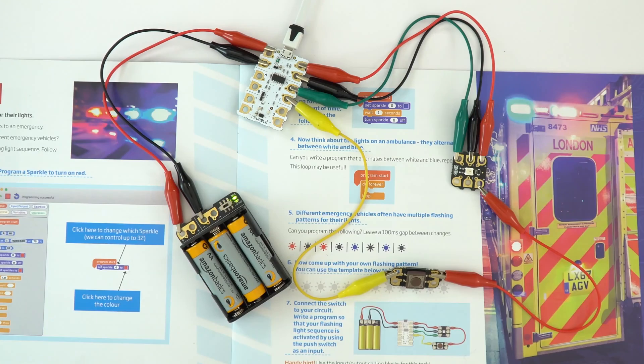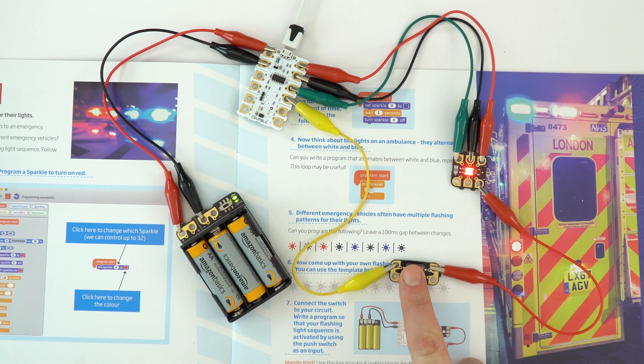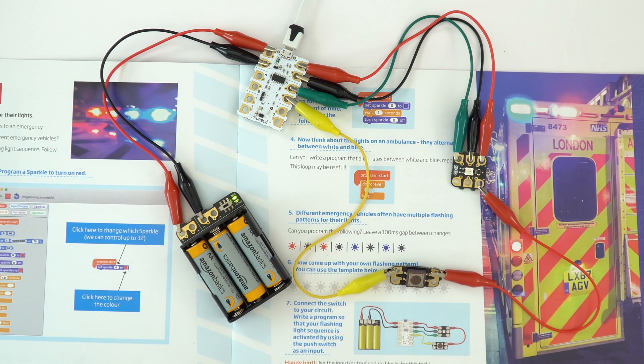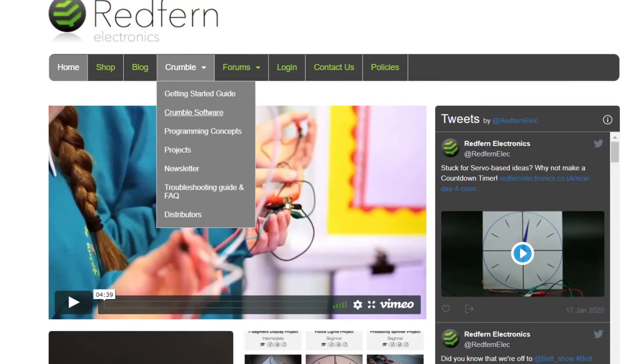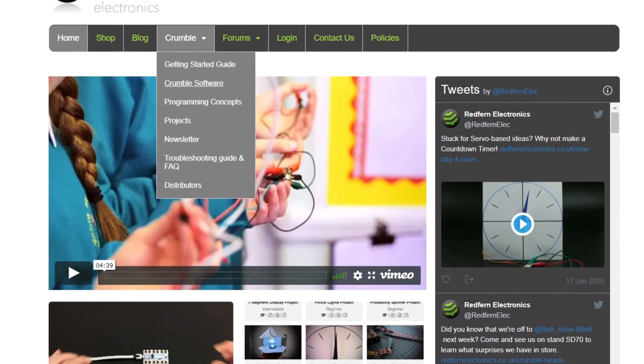Before you get started using the Crumble in the classroom, you'll need to download the latest version of the Crumble software on your computer and the computers your students will use, which will need a USB input. The Crumble software is available on the Redfern website.